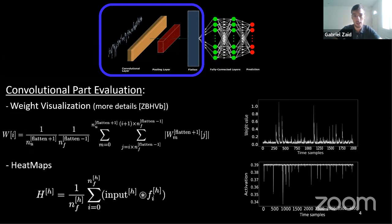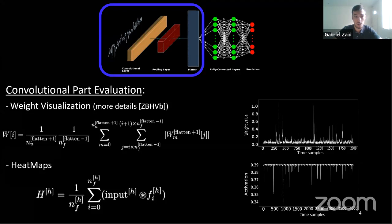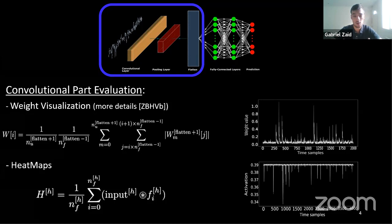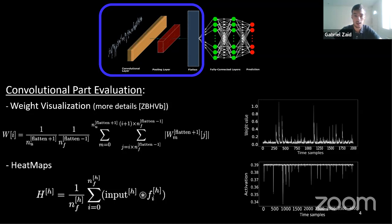Weight visualization evaluates the ability of the convolutional part to recover sensitive information. It helps understand how parameters such as feature size and number of convolutional blocks affect point of interest detection — not as a performance metric, but as a diagnostic tool. Heat maps visualize the convolutional operation between an input and a feature, helping us understand how the feature activates relevant information across convolutional blocks.